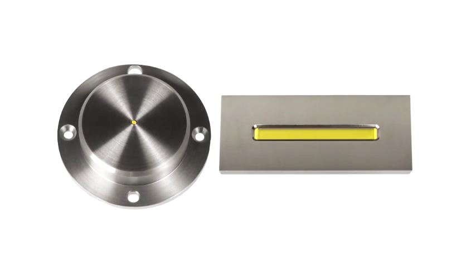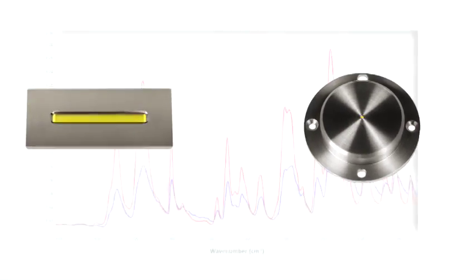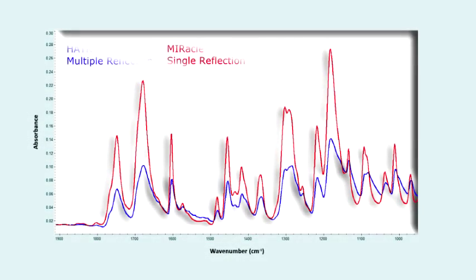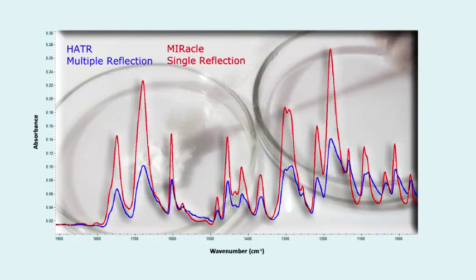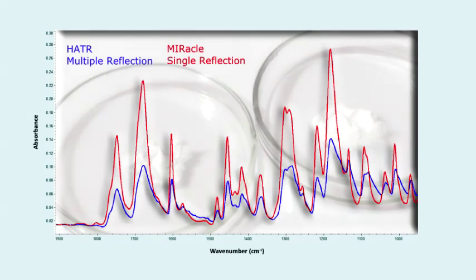To illustrate, these are spectra of a powder collected using the Pike Miracle and HATR. Despite the 10 reflections of the HATR accessory, the magnitude of the absorbance bands is significantly weaker when compared to a single reflection ATR.